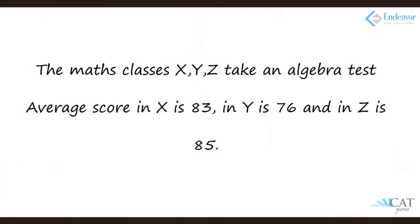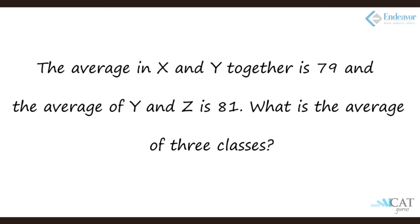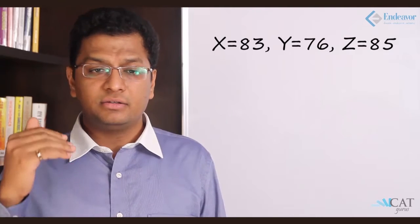Let us look at another example. The math classes X, Y, and Z take an algebra test. The average score in X is 83, in Y is 76, and in Z is 85. The average in X and Y together is 79, and in Y and Z together is 81. What is the overall average of the three classes? I do not know the number of students across the classes.